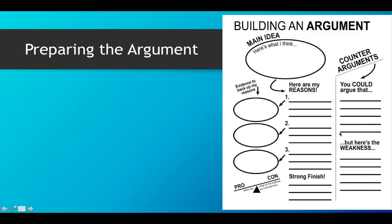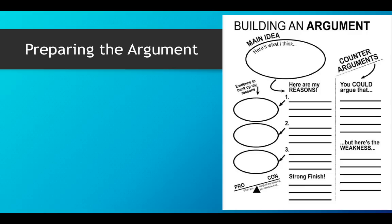A brief overview of counter-argument and rebuttal: a counter-argument is what the opposition is going to say that opposes what you've claimed in your thesis statement — it's the opposite point of view. You include that in your essay so your reader understands you've considered all sides of the situation, which is logical. A counter-argument acknowledges the opposition, and a rebuttal talks about the opposition's weakness. You might print this off — I'll post it in the learning management system so you can fill it in as you work on your essay.